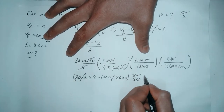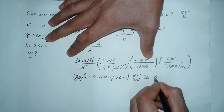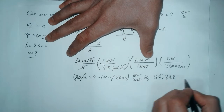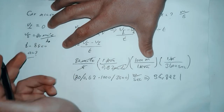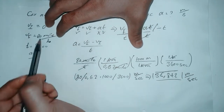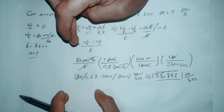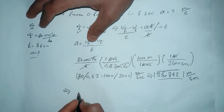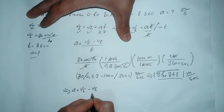When we multiply and divide these, we get approximately 35.842 meters per second. So our final velocity is 35.842 m/s. We have successfully converted from miles per hour to meters per second. Now we will put all these values into the acceleration formula: acceleration equals final velocity minus initial velocity divided by t.